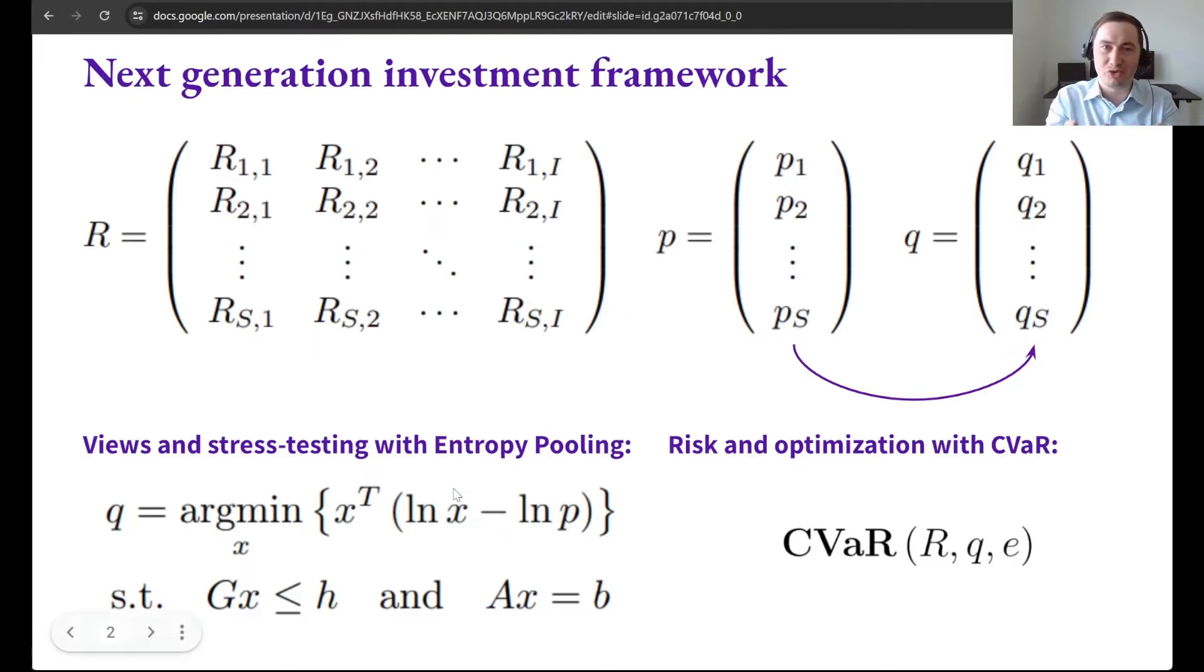The basic method we use for this probability measure change is called entropy pooling. This is something you can use in many different sophisticated ways, which will give you insights that are not possible with other conventional methods.